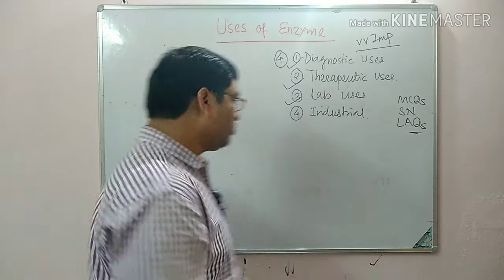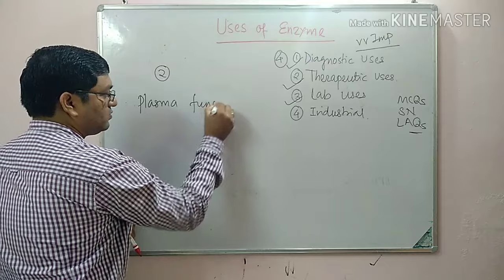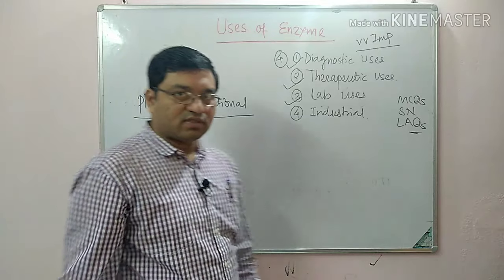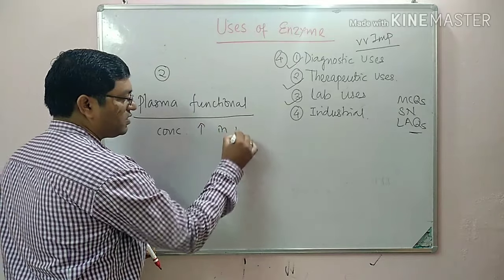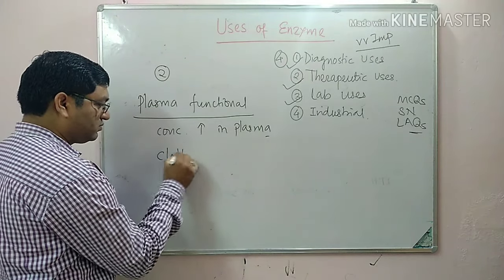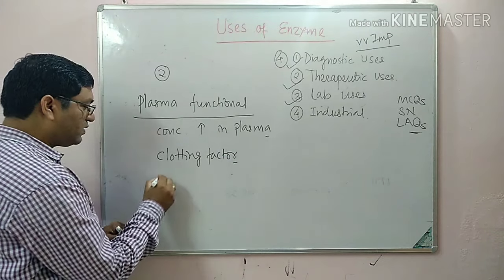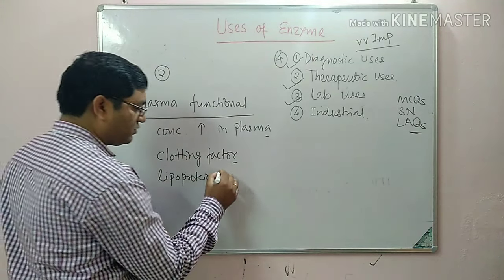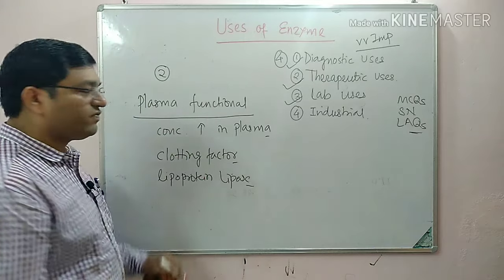In this topic, enzymes are divided into two main groups. The first is plasma-specific or plasma-functional enzymes. The concentration of these enzymes is higher in plasma and they are functional in the plasma. For example, clotting factors are functional in the plasma. Another example is lipoprotein lipase, which is also important in the plasma.